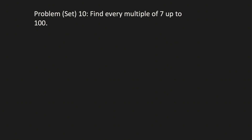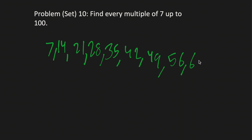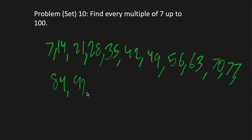Moving on to our final problem — Problem 10. Find every multiple of 7 up to 100. Give it a try! The multiples are: 7, 14, 21, 28, 35, 42, 49, 56, 63, 70, 77, 84, 91, and 98. After that would be 106, but that's over 100.